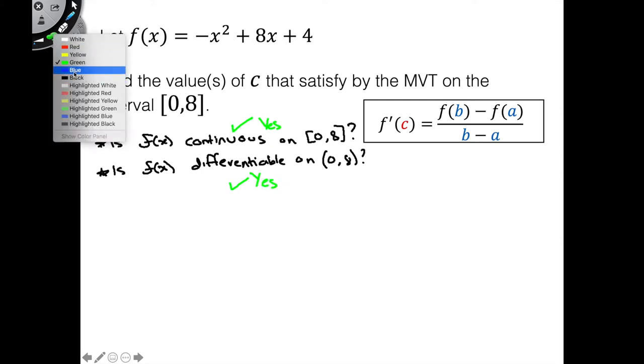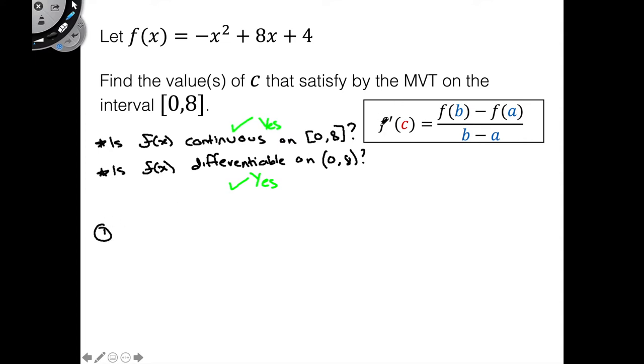Beautiful. So now we can flow on with our next step here, which is going to be to solve for the average rate of change. That, of course, being the right-hand side of this equation here. So let's go ahead and do that. So we're going to have f of b is going to be f of 8, minus f of a, which is going to be f of 0, over 8 minus 0.